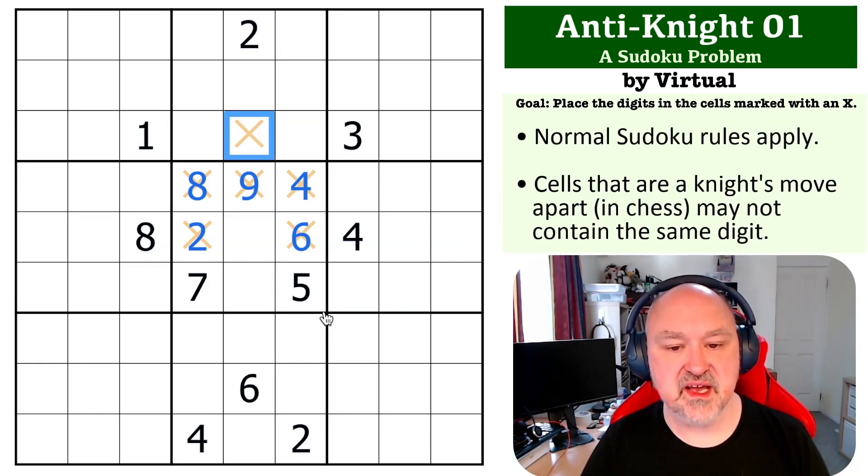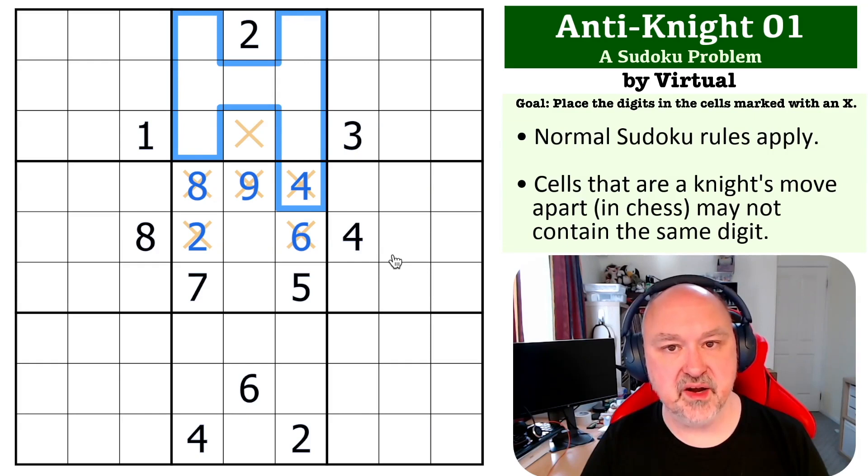Now, this cell here is the last one we need to get, but you need to use a slightly different trick for this one, which is you cannot put four in this column, you cannot put four in this column, and this four sees that cell by knight's move.